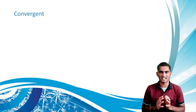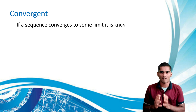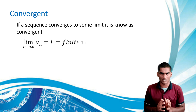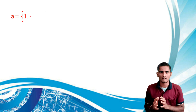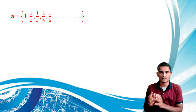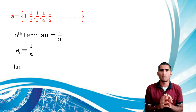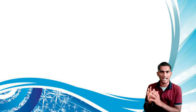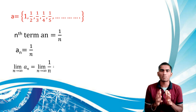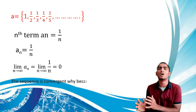Next is convergent. If a sequence converges to some limit, it is convergent — that is, limit as n tends to infinity of a_n equals a finite value. For example, the sequence 1, 1/2, 1/3, 1/4, 1/5, and so on, has nth term 1/n. Applying the limit: limit as n tends to infinity of 1/n equals 1/∞ equals 0. Since it converges to 0, this sequence is convergent.